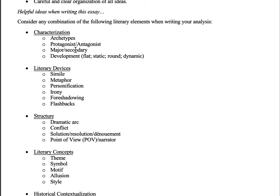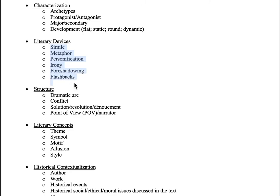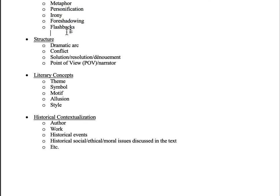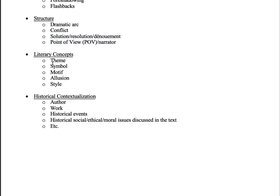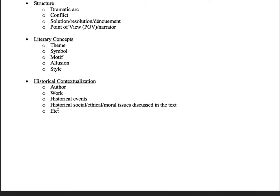Some suggestions for literary analysis: think about characterization — archetypes, protagonist, antagonist, whether characters are flat or round. Look at literary devices like similes, metaphors, foreshadowing, flashbacks, and irony. Look at structure — dramatic arc, exposition, rising action, climax, falling action, resolution. Consider point of view, narrator, themes, symbols, motifs, and allusions. Secondarily, look at historical context: the author's biography, the history of the work, events surrounding its writing, and the ethical, moral, or social issues of the time.